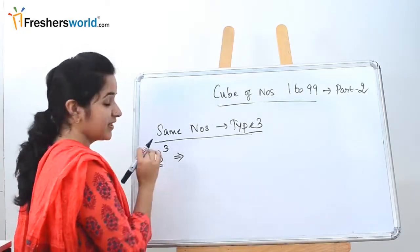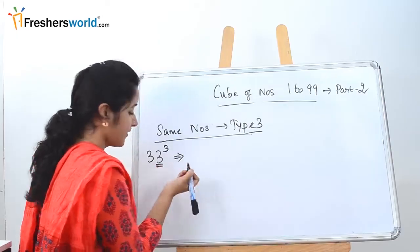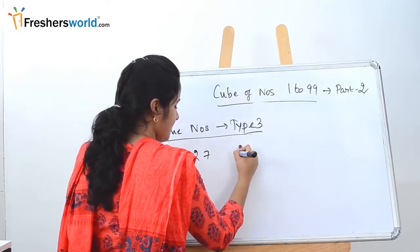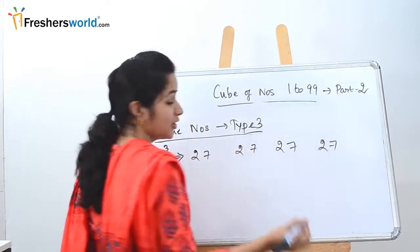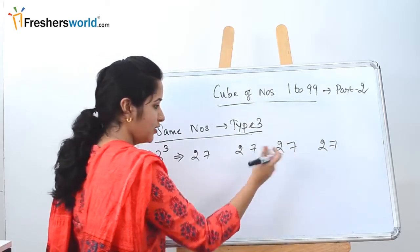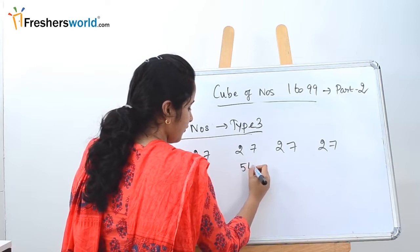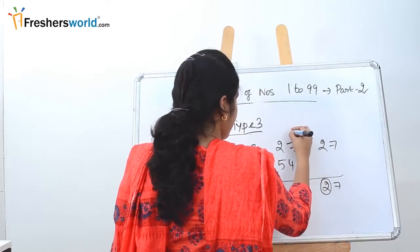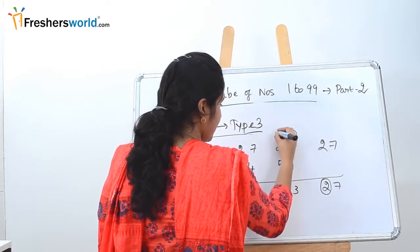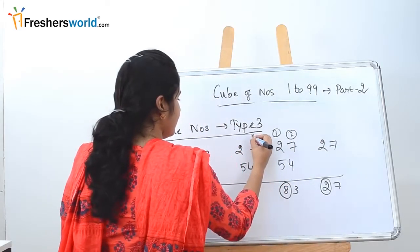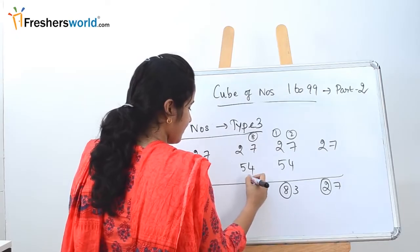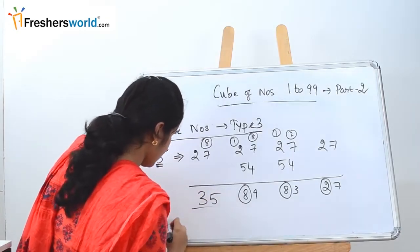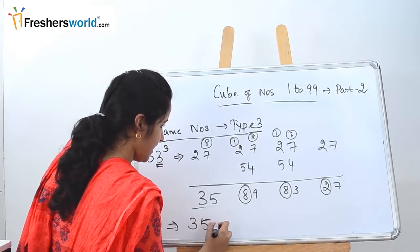Type 3 is same numbers — for example, 33 cubed. The concept here: cube the digit, so 3 cubed is 27. Write 27 across all four positions: 27, 27, 27, 27. Then multiply the middle two digits by 2: 27 × 2 = 54. Place 54 in positions 2 and 3. Now add from right to left with carry-overs: 7, then 2 carry; 9, 13 → 3 carry 1; 8 carry → 15, 19 → 9 carry; 8+7=15, 35 → answer digits: 3, 5, 9, 3, 7.